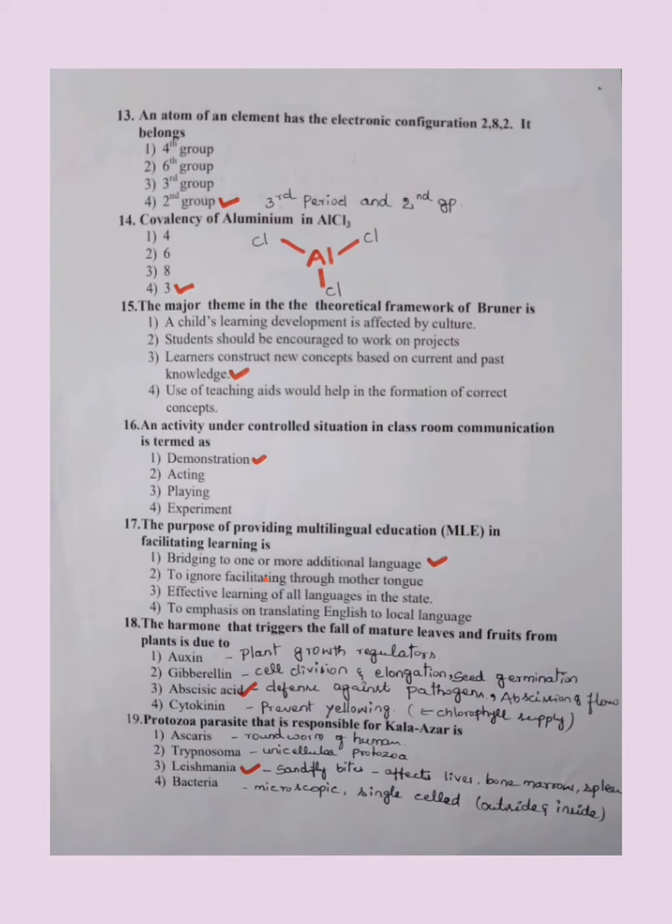An atom of an element has electronic configuration 2, 8, 2. It belongs to which group? The options are given in terms of groups: fourth group, sixth group, third group, second group. The answer is it belongs to second group and third period. You can check with the periodic table if you refer you will understand this concept. For more clarification we will take one class based on this periodic table in the next following classes.